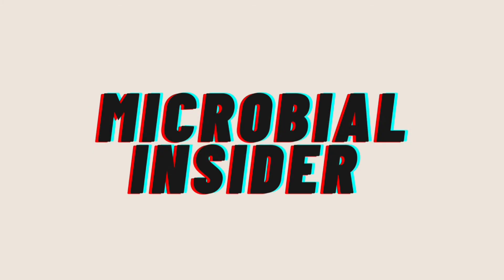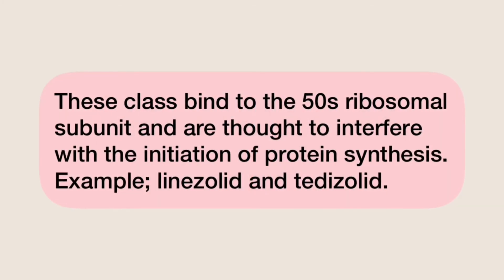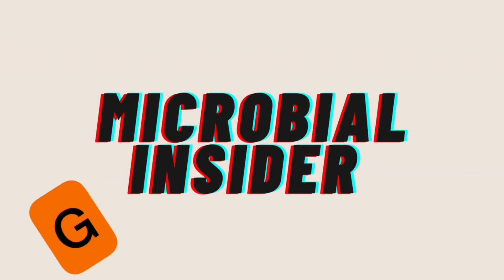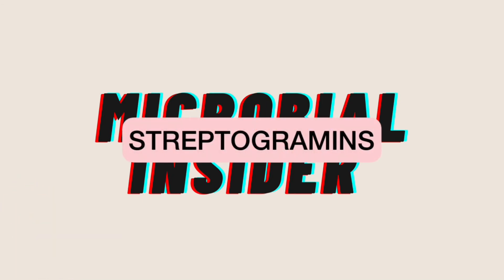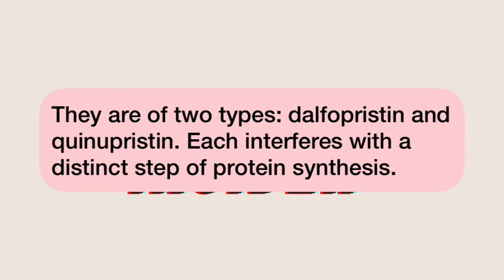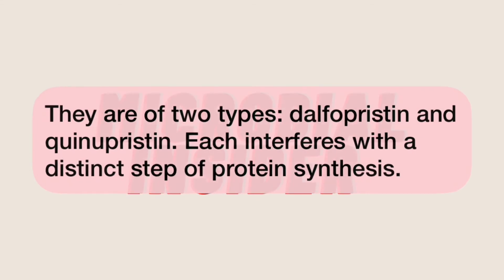Oxazolidinones: this class binds to the 50S ribosomal subunit and is thought to interfere with the initiation of protein synthesis. Examples include linezolid and tedizolid. Streptogramins are of two types: dalfopristin and quinupristin, each of which interferes with a distinct step of protein synthesis.